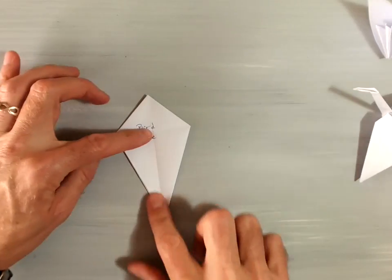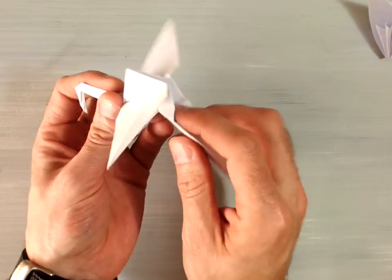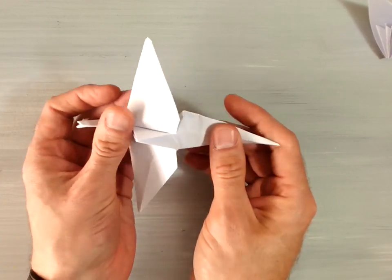Now, as you continue on and start making more complicated models, you can start unfolding these. This is our typical traditional paper crane.